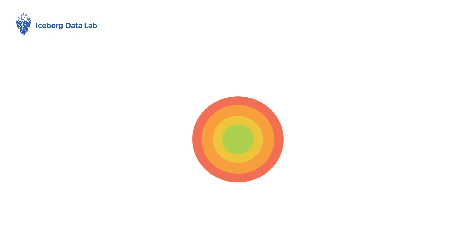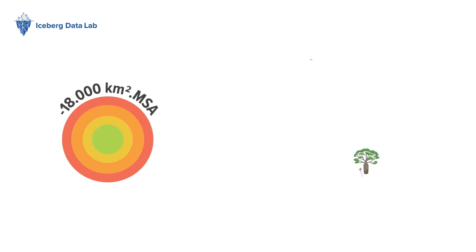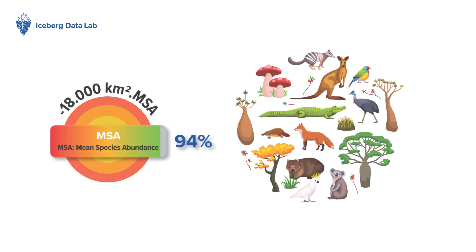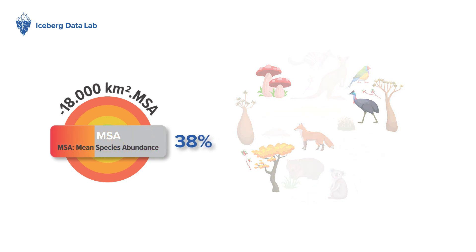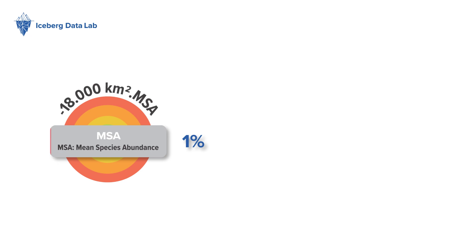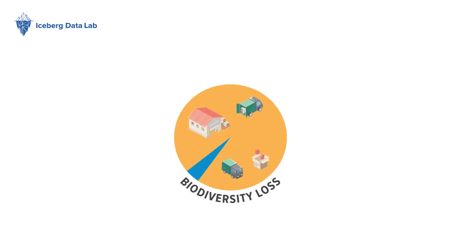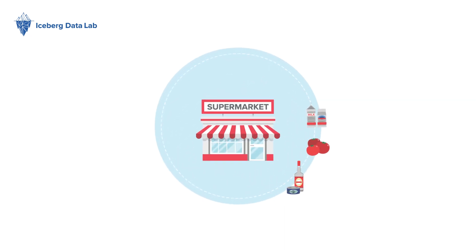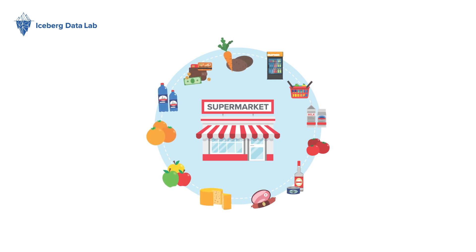The supermarket's biodiversity impact equals negative 18,000 square kilometer MSA in 2022, which means that to operate and throughout its whole value chain, the company has brought the surface's MSA to 0% for 18,000 square kilometers. When analyzing further the company's impact, we can see that over 90% of it comes from land use in its scope 3 upstream, meaning its impact is mainly determined by the products it sells. As the food sector is one of the most material for biodiversity, all supermarkets carrying food products have a significant impact on biodiversity.